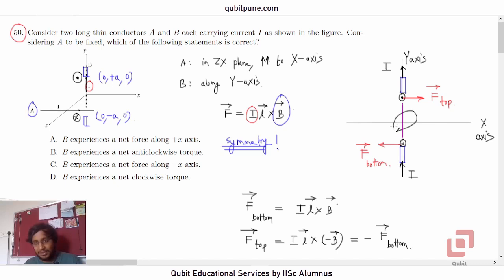So correct option is B experiences a net clockwise torque. Net clockwise torque. So question 50, answer D. In the next video we will be solving question number 51.